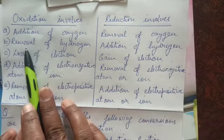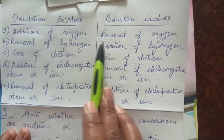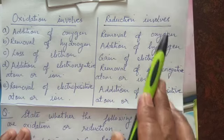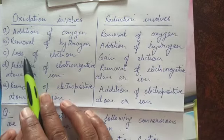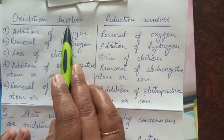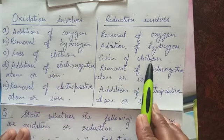Oxidation is removal of hydrogen and addition of hydrogen is reduction. Now loss of electron is oxidation and gain of electron is reduction.